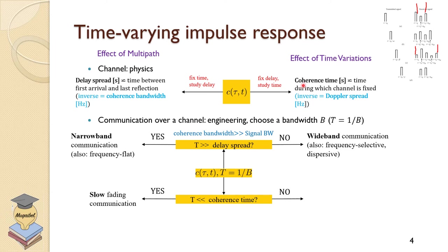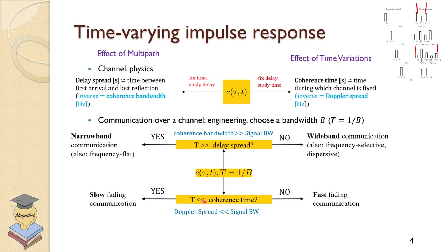We can also look at this in time and frequency domain diagrams. If the symbol duration is less than the coherence time, we have slow fading — the channel does not change while the symbol is being sent. Otherwise, we have fast fading. So we have four combinations: narrowband or wideband, and slow or fast. A single communication could be wideband and fast, or wideband and slow. Our initial focus will be on narrowband, both slow and fast fading.